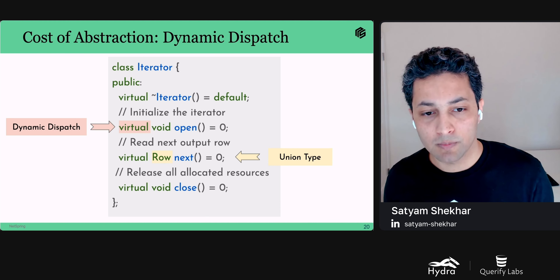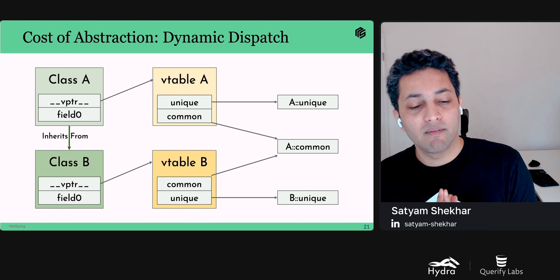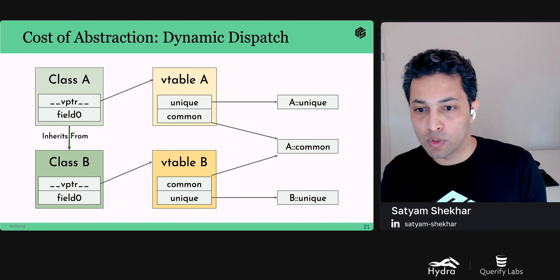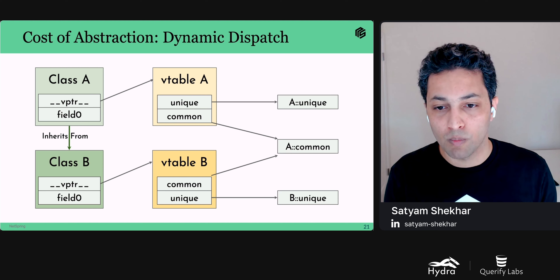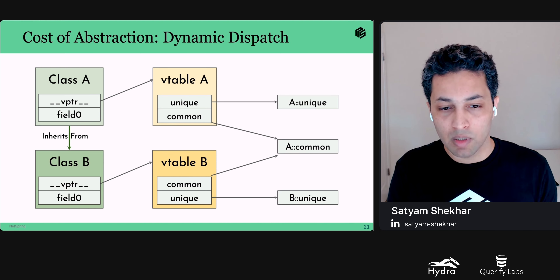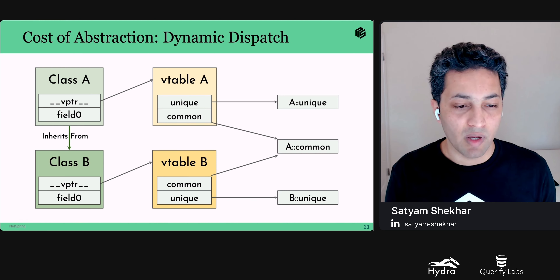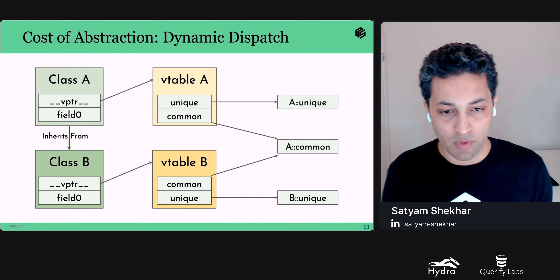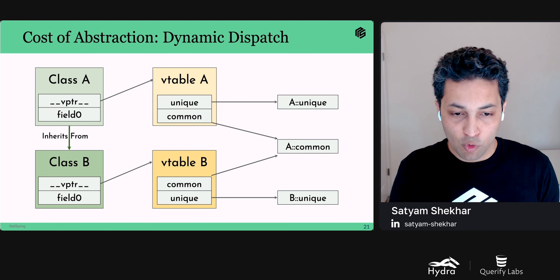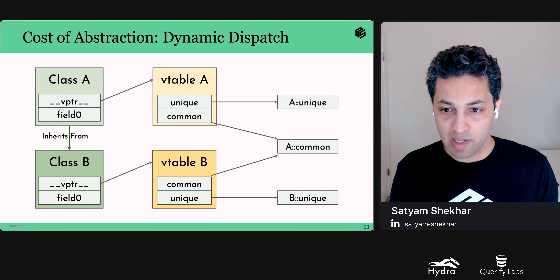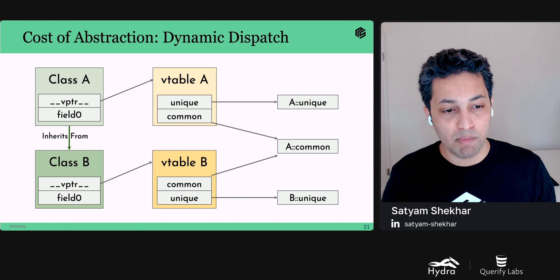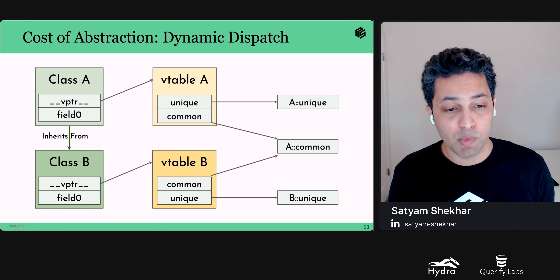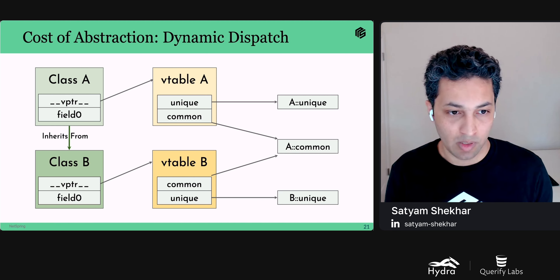Dynamic dispatch — the flexibility offered by virtual functions that allowed us to decouple data from operator implementations — comes at a cost. Dynamic dispatch requires indirection to enable runtime polymorphism, often via a V-table. The side effect of the V-table is that besides adding an extra memory interaction for every row passing through this interface, virtualized functions cannot be inlined by the compiler since the exact method invoked is not known until runtime. So the compiler misses out on many optimization opportunities, and the code runs slower.